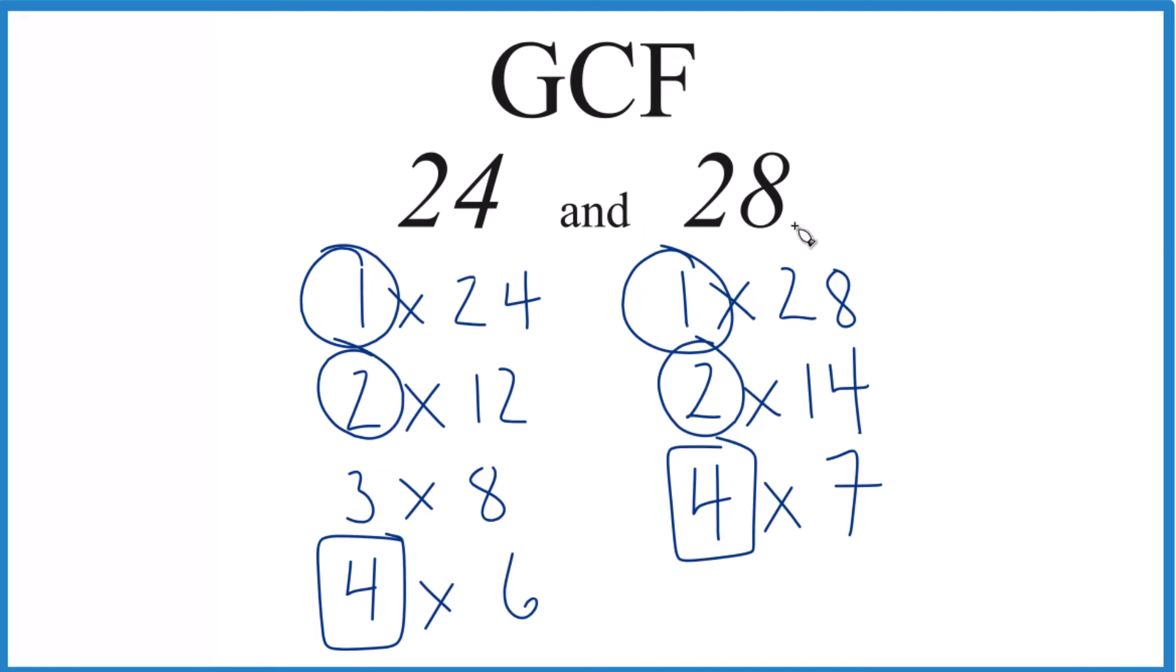Goes into both 24 and 28 evenly. So in answer to our question, the GCF for 24 and 28, that's 4.